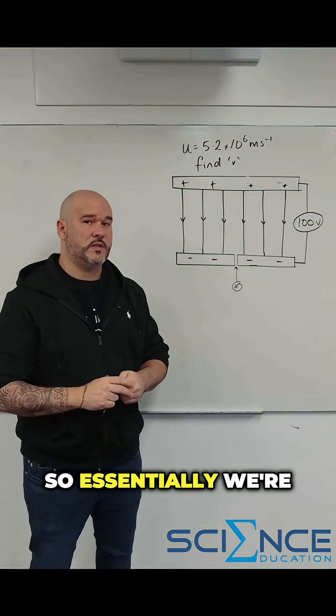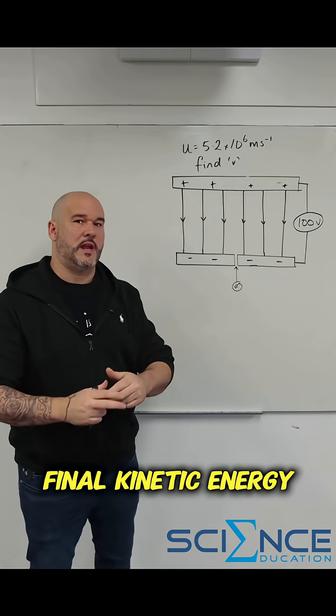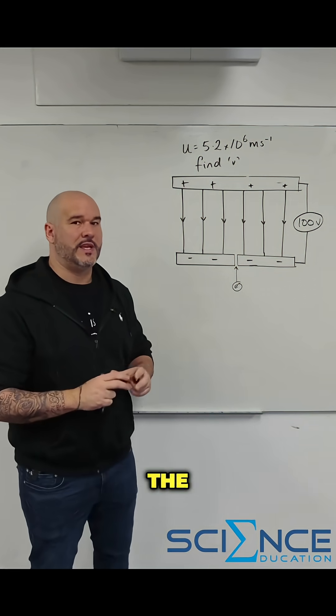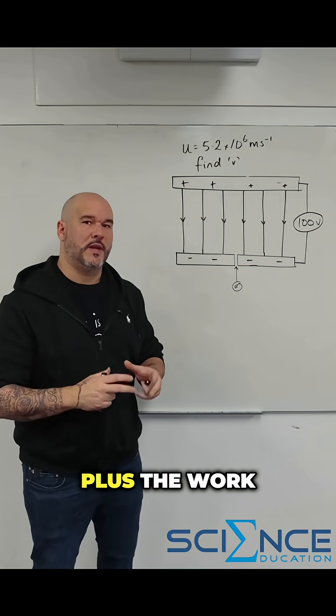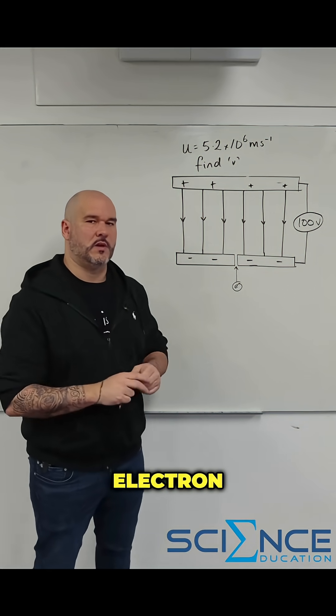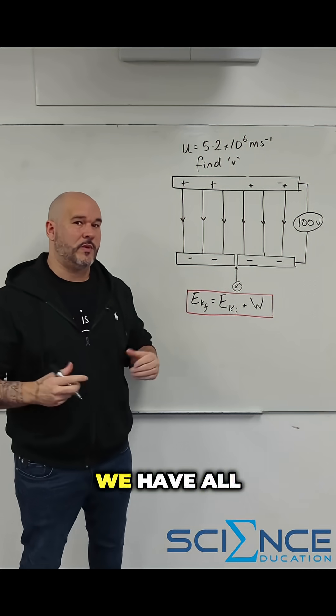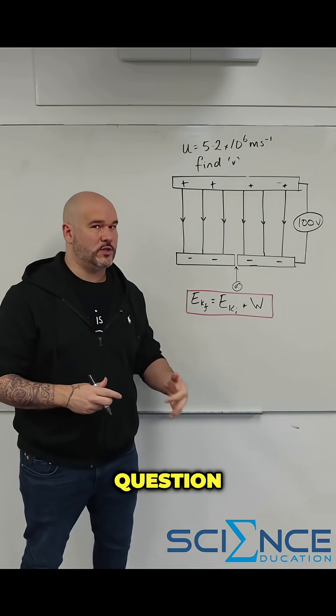So let's look at how we'll set this up. Essentially we're going to say the final kinetic energy of the electron is equal to the initial kinetic energy of the electron plus the work done on the electron by the electric field. And pretty much here we have all the information we need in the question or in our data sheet.